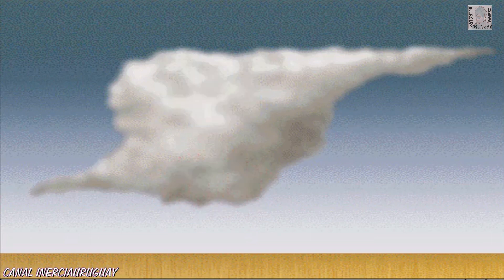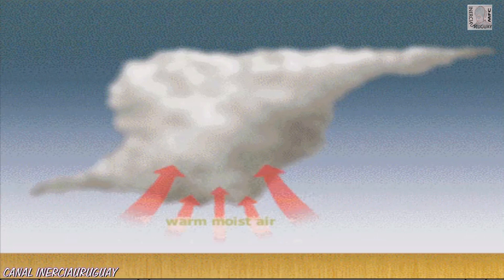Scientists aren't exactly sure how tornadoes form, but think they usually begin when an updraft of warm, moist air rises rapidly through cold air near the top of the cloud. As this happens, more warm air rushes in to replace it, and colder air is forced downwards.